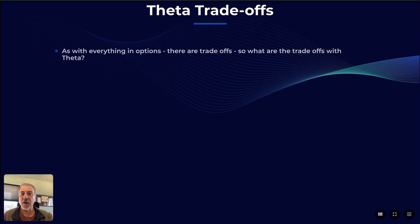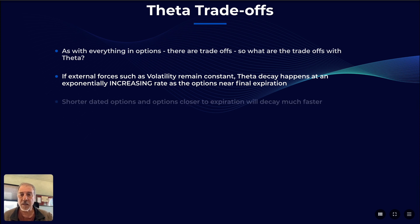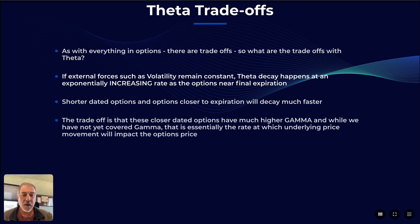As with anything in options, there are trade-offs. The main trade-off with Theta is that, assuming external forces such as volatility remain constant, Theta decay happens at an exponentially increasing rate as options get closer to expiration. Shorter-dated options and options closer to expiration decay much faster. The trade-off is that these closer-dated options have much higher Gamma — which we'll cover in a subsequent session — and that's essentially the rate at which underlying price movement will impact the option's price.